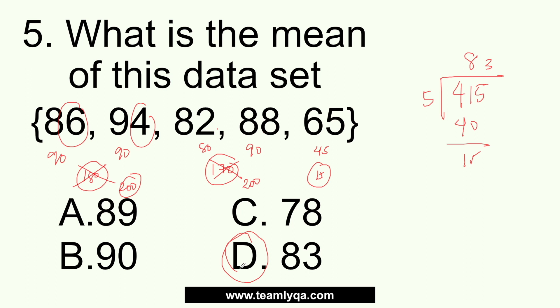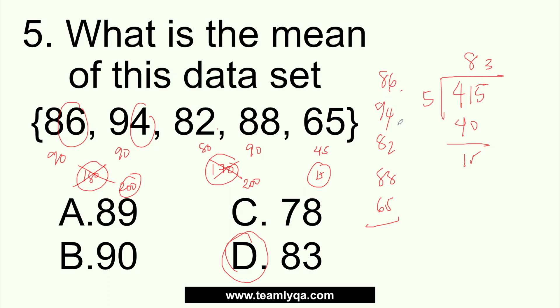So again, the goal here is for you to be faster. When it comes to the exam, you don't need to write out all of 86, 94, 82, 88, 65 and then add 6 plus 4 plus 4 plus 4 plus 4 just to reduce your solving like that. Hopefully, the technique I taught you was helpful.